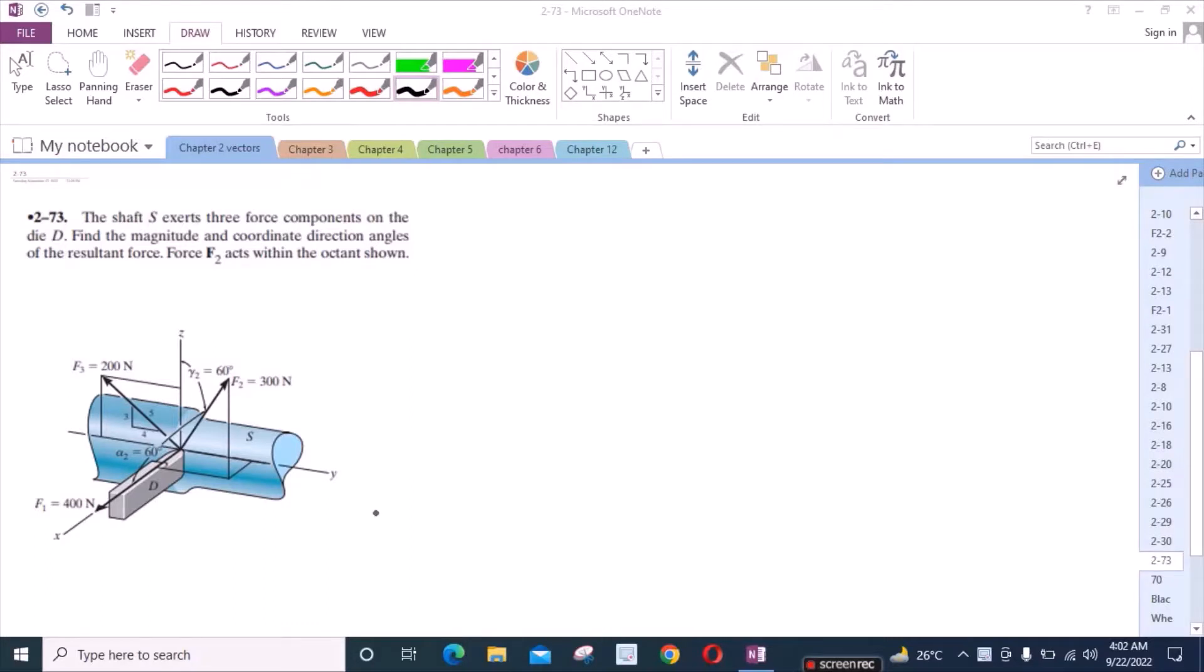Welcome to the Solutions Manual. In this video, we will solve problem 2-73 from R.C. Hibbeler Engineering Statics 12th edition. According to this problem, the shaft S exerts three force components on the die D. Find the magnitude and coordinate direction angles of the resultant force.